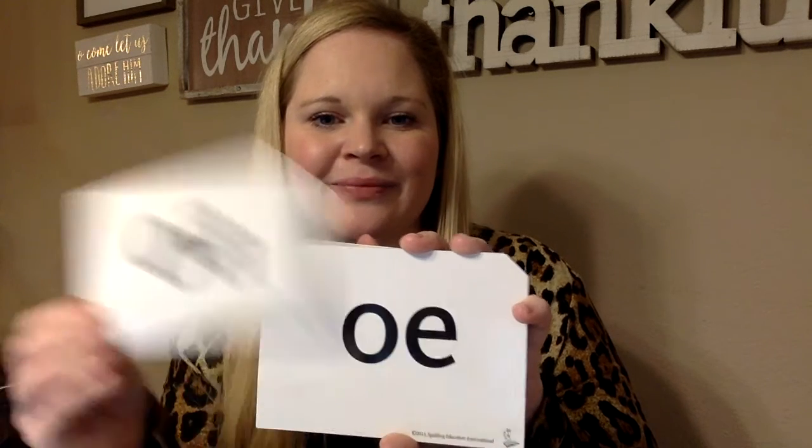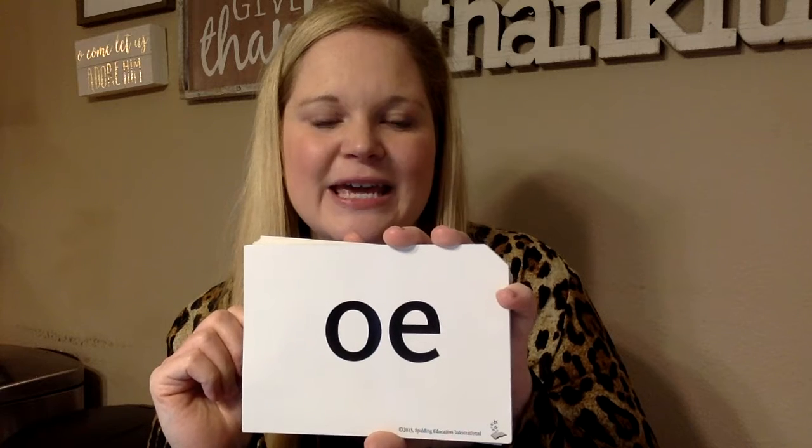Next letters: E-Y. First sound: E. Second sound: A. Third sound: I. Next letters: O-A — what sound? O. Next letters: O-E — what sound? O. Next letters: E-I-G-H — what sound? A. Next letters: I-G-H — what sound? I. Next letters: O-R — what sound? O-R.